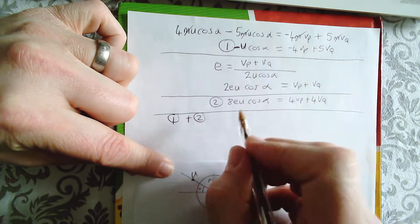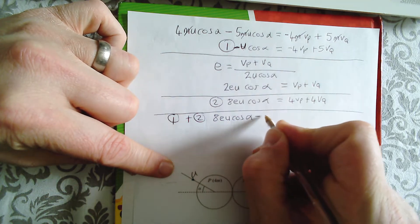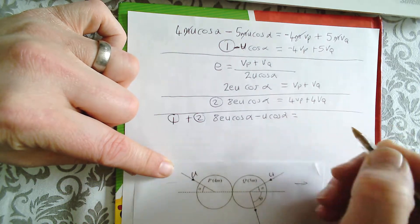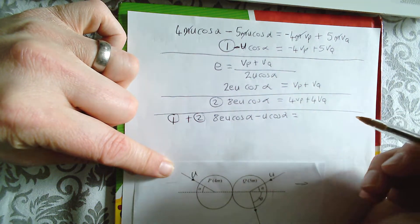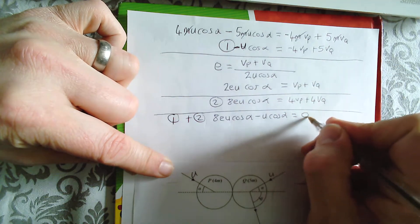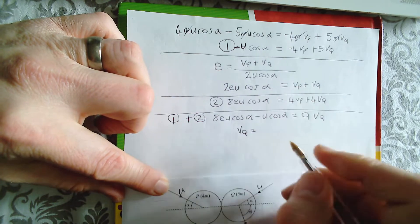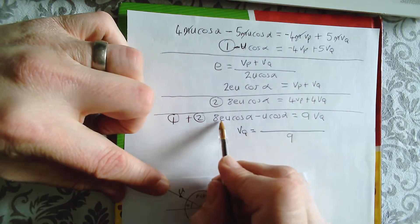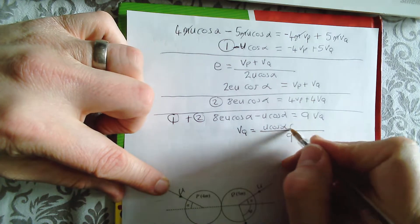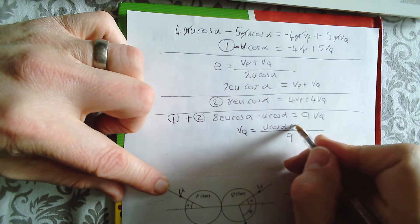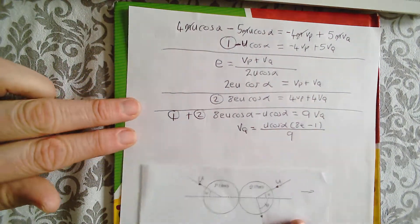This add this. I'm adding the triggy bits. It's 8 EU cos alpha minus U cos alpha, which is going to equal, well, look at this. The Vp's, I've got negative 4 lots of Vp's. I add 4 lots of Vp's. They cancel out. And I get 9 Vq's, 5 add 4, 9 Vq. Well, that's going to tell me that Vq will equal something over 9 because there's 9 lots of them. Now, let's look at the common factor, U cos alpha. Now, what do I have? I have 8 E lots of it there and I just have 1 lot of it there minus 1.